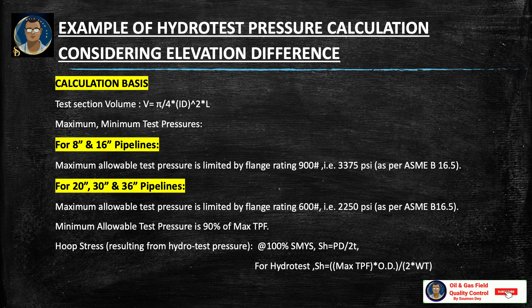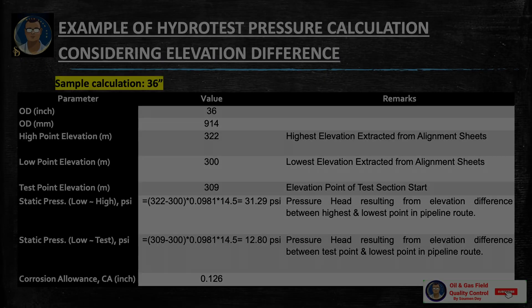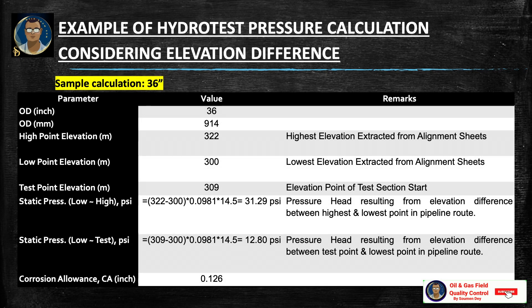Maximum allowable test pressure is 90% of maximum test pressure. Hoop stress resulting from hydro test pressure at 100% SMYS is: SH = P × D / (2 × t). For the sample calculation of a 36-inch pipe: outside diameter is 36 inches (914 mm), high point elevation is 322 m, lowest point is 300 m, and test point elevation is 309 m.